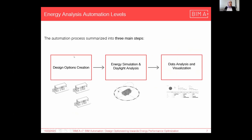The automation process will be summarized into three main steps. The first step is design option creation, then energy simulation and daylight analysis, and the final step will be data analysis and visualization.